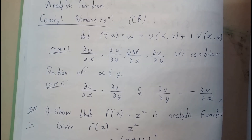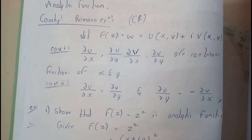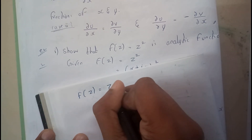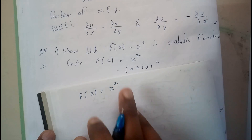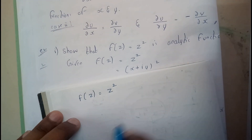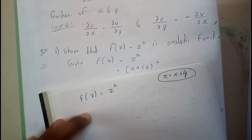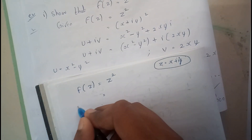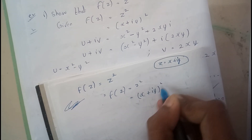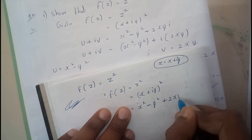Now let us take a small example. It is given f(z) = z², and we are asked to show that f(z) = z² is an analytic function. We need to remember that z = x + iy. Given f(z) = z², where z = x + iy, substituting: (x + iy)².